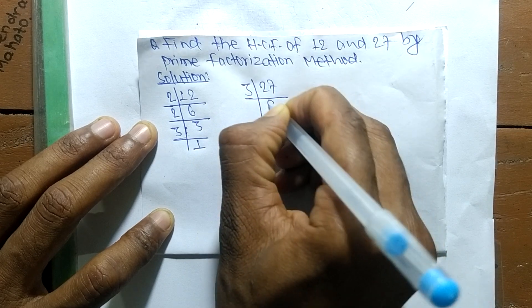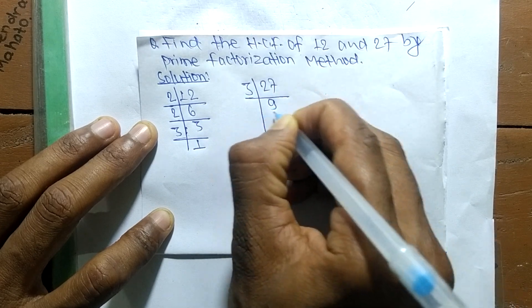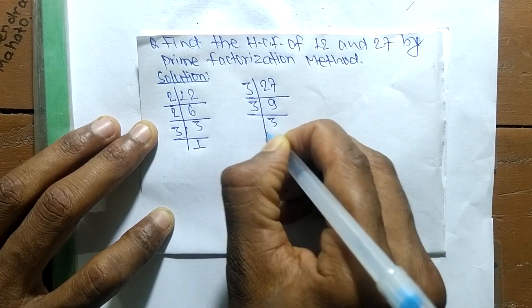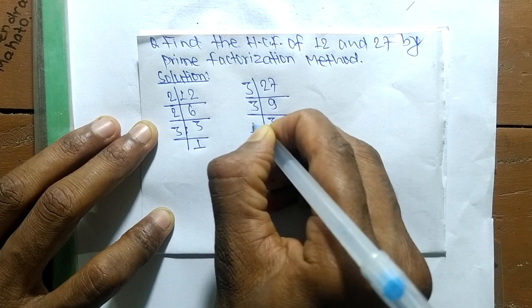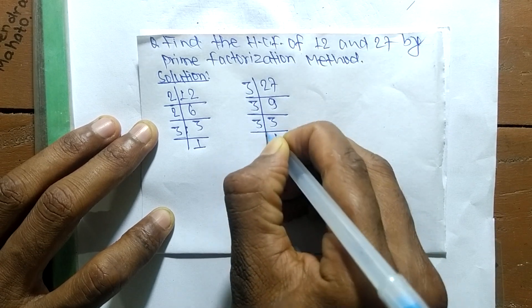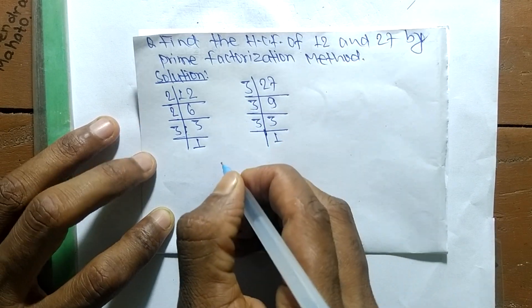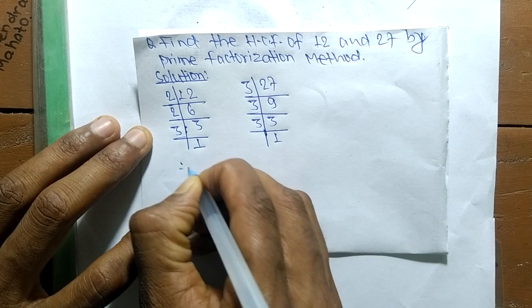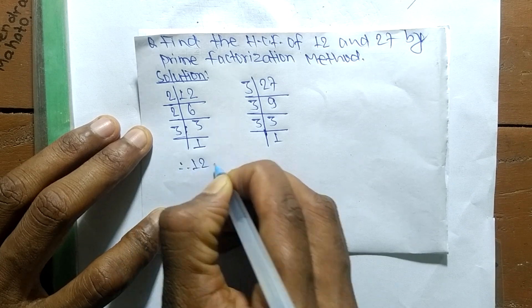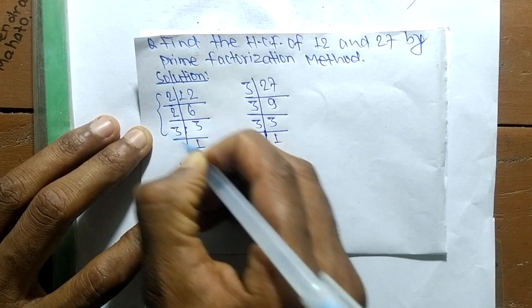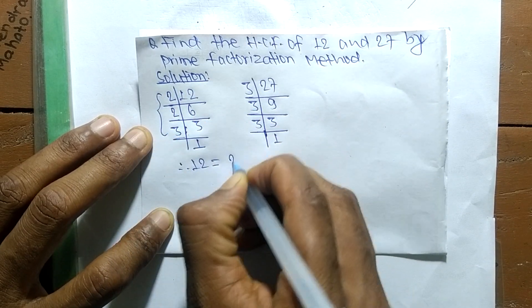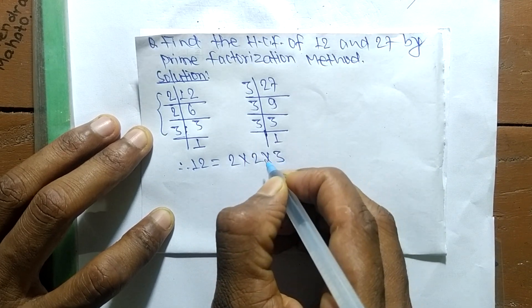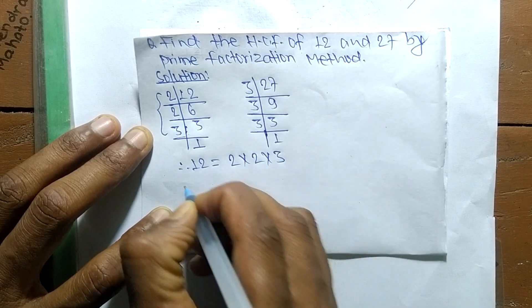The prime factors of 27 are: 3 times 9 equals 27, 3 times 3 equals 9, and 3 times 1 equals 3. So from the prime factors of 12, we get 2 times 2 times 3.